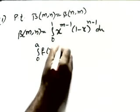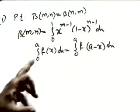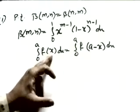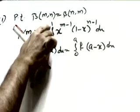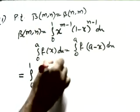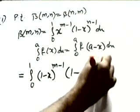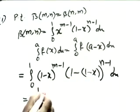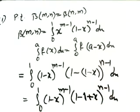There are many methods; I am using this one. I will use the formula of definite integration: the integral from 0 to a of f(x) dx can be written as the integral from 0 to a of f(a - x) dx. Applying this here: in place of x we write 1 - x, giving (1-x)^(m-1) times (1-(1-x))^(n-1), which simplifies to (1-x)^(m-1) times x^(n-1).